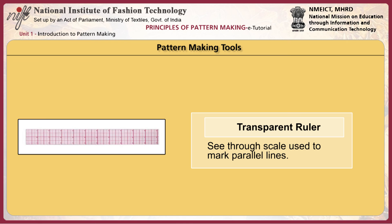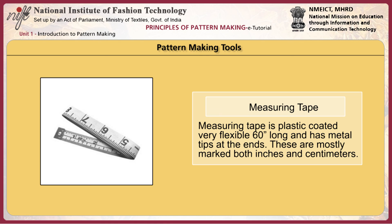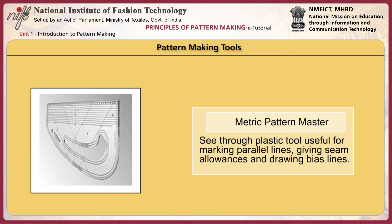The transparent ruler is a see-through scale used to mark parallel lines. Scissors or shears are cutting devices used for cutting paper and fabric, normally available in 6 to 9 inches. The measuring tape is a plastic-coated, very flexible 60-inch-long tape with a metal tip at the end, mostly marked with both inches and centimeters. The tracing wheel has a pointed wheel at one end and a wooden or plastic handle on the other, used to transfer pattern markings. The metric pattern master is a see-through plastic tool used for making parallel lines, giving seam allowances, and drawing bias lines.